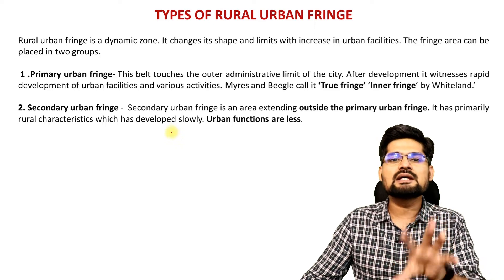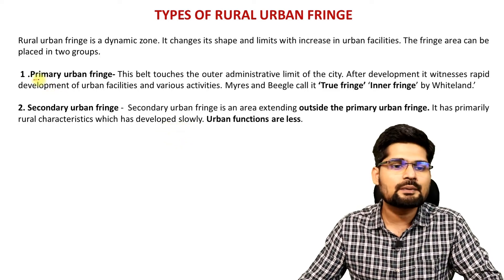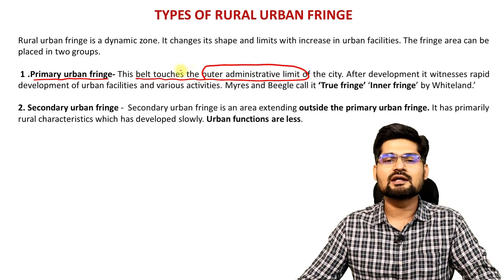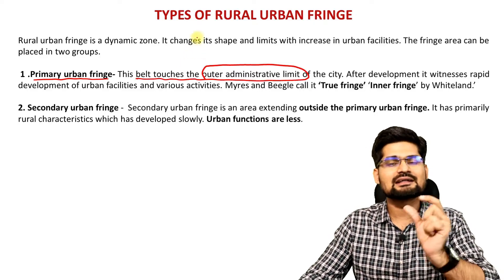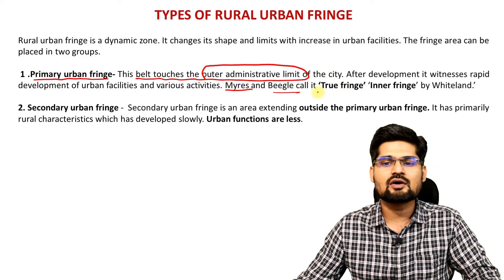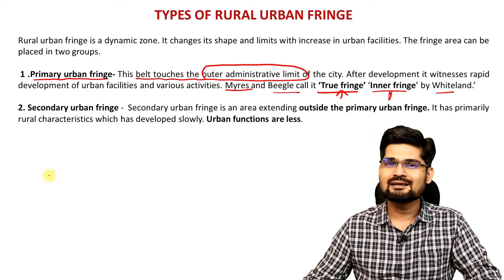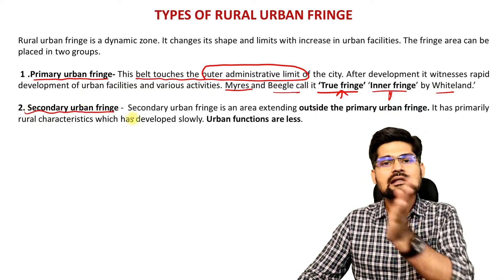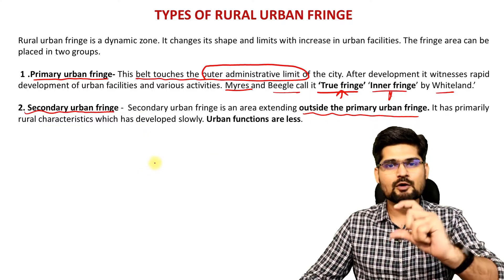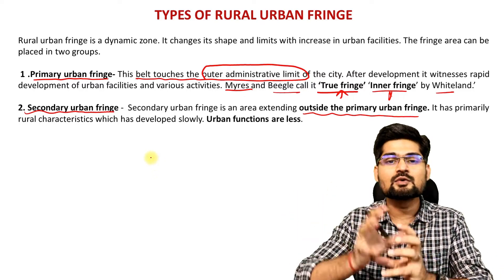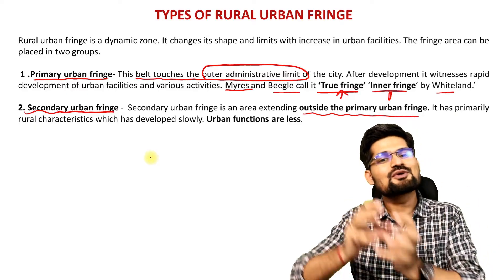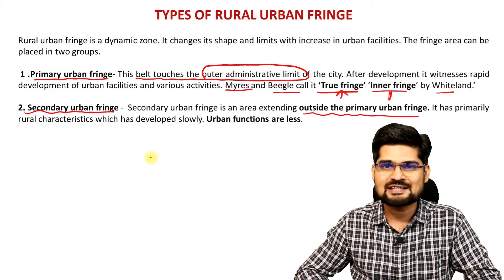Rural urban fringe has majorly been described as two types. The primary urban fringe is the belt that touches the outer administrative limit — the inner fringe — which is in close proximity or connectivity with the main administrative boundary of the city. Myers, Beagle and other scholars have also called it the true fringe or inner fringe. The secondary urban fringe is the next one in line, with more proximity to the rural hinterland. So primary fringe is more urban, secondary fringe is more rural — that's the further subclassification.